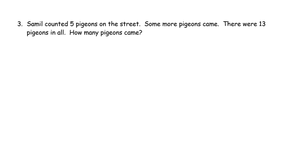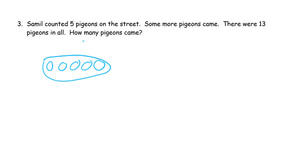Samil counted five pigeons on the street. Some more pigeons came. There were 13 pigeons in all. How many pigeons came? So here's five on the street — I draw one through five. These are the pigeons, the street pigeons, labeled S. Got to label those pictures. More pigeons came — we don't know how many, but we know that there's going to be 13 in all.